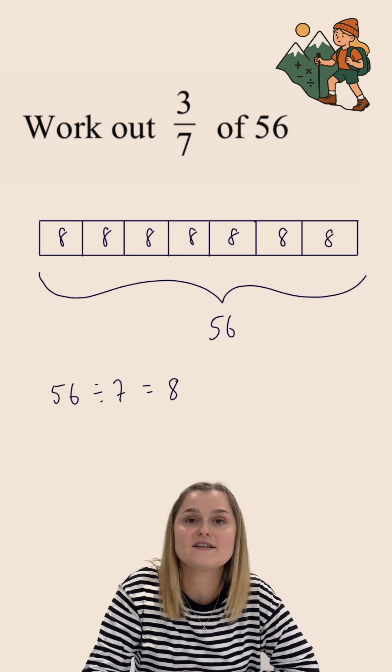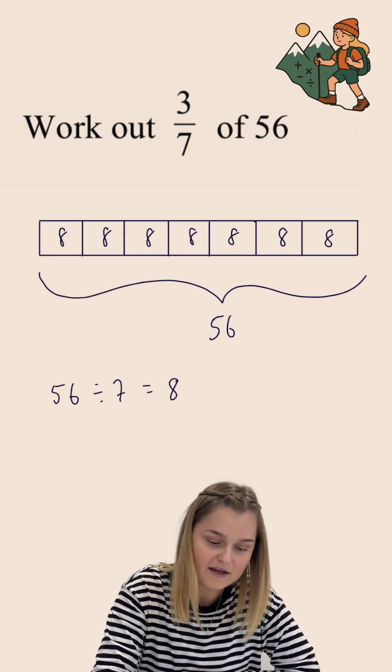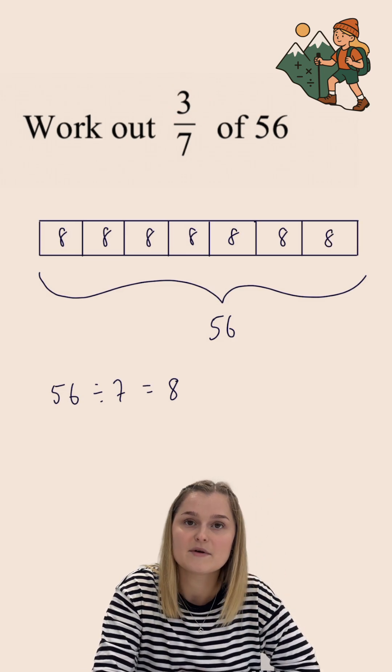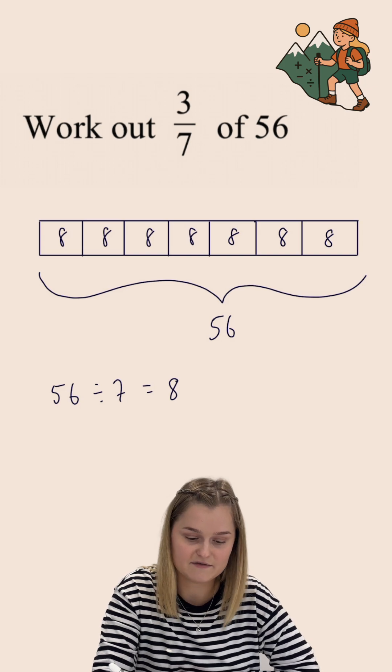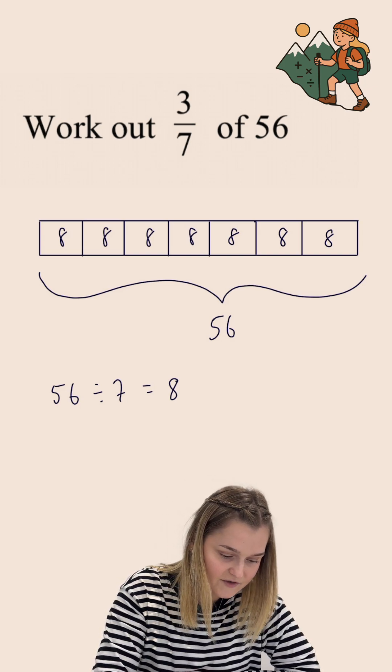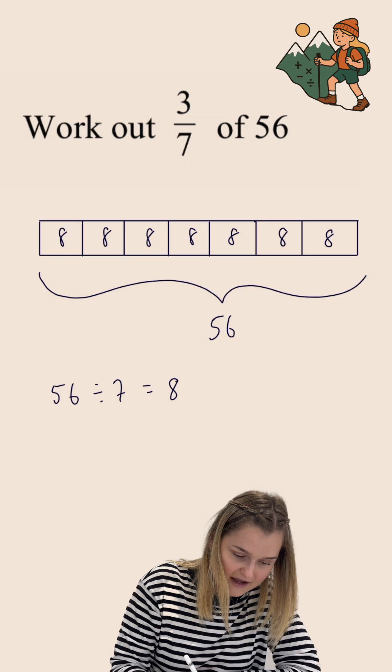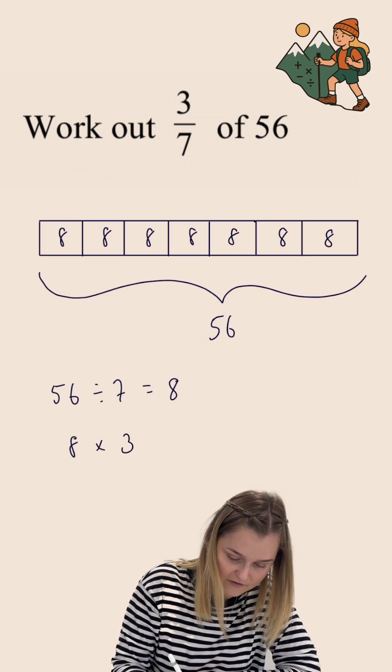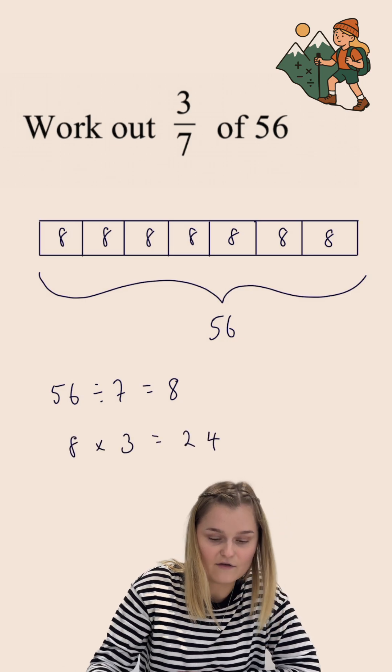Now I wasn't interested in every single part of my bar model. I'm only interested in three of the pieces because I'm trying to find what three sevenths of 56 is equal to. So what I need to do now is I need to do eight multiplied by three, which gives us an answer of 24.